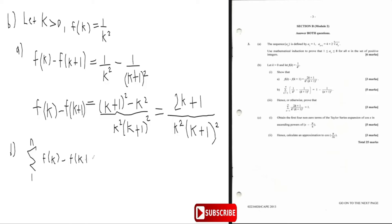This is what we're finding. I'm going to work out the sum from one to n of f of k first. When k equals one, you get one over one squared, which is one. When k equals two, you get one over four. When k equals three, you get one over nine. And you continue until k equals n, giving plus one over n squared.